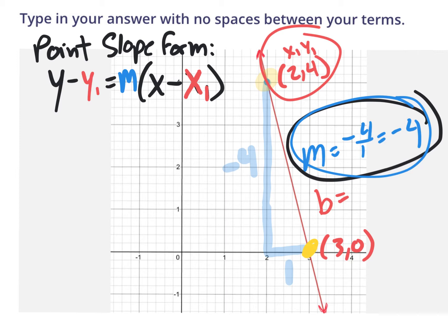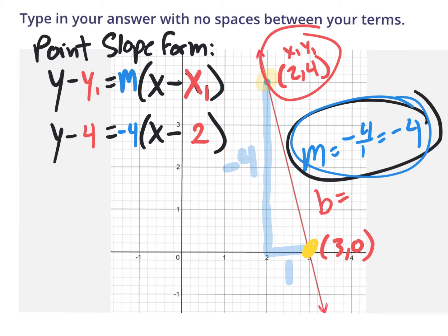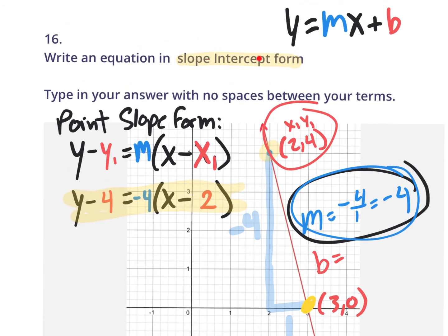There's the point-slope form that we need to have memorized. Whenever you apply point-slope form, please rewrite it with blank spots — that way it'll be easy to plug in your values. Plug in your y1 value of 4, your x1 value of 2, and your m value of negative 4. This is your point-slope form equation. But the instructions say slope-intercept, not point-slope.